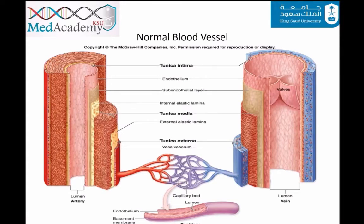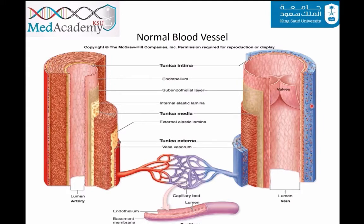The innermost layer, the tunica intima, is composed of a single layer of flattened squamous endothelial cells which form a tube lining of the lumen of the vessel and the underlying subendothelial connective tissue. The intermediate layer, the tunica media, is composed mostly of smooth muscle cells oriented concentrically around the lumen. The outermost layer, the tunica adventitia or tunica externa, is composed mainly of fibroelastic connective tissue arranged longitudinally.